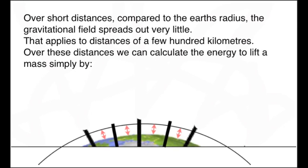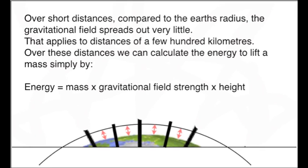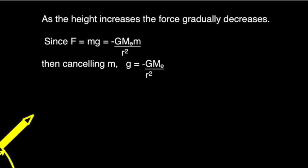Over these very short distances, we can calculate the change in gravitational energy simply by multiplying mass by gravitational field strength by the height, that's E equals mgh. This simple approach depends upon little g, the Earth's gravitational field strength, being constant.